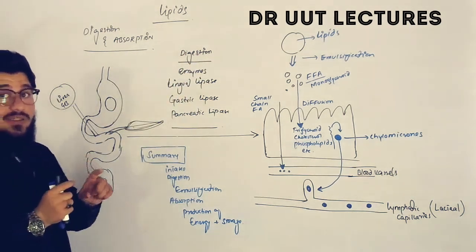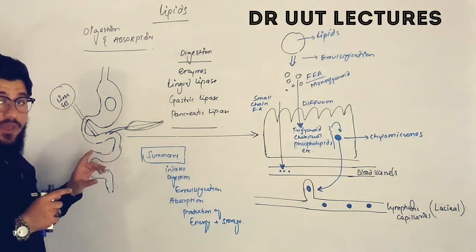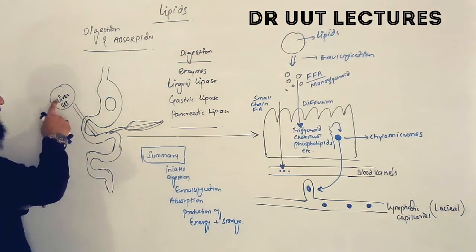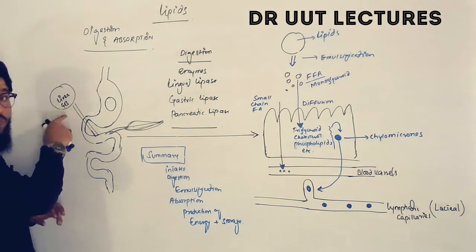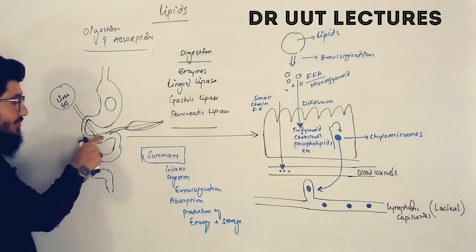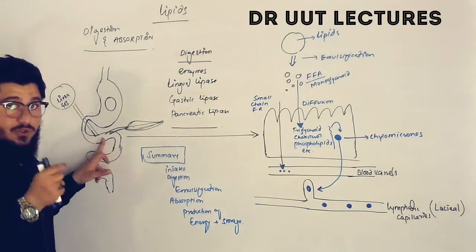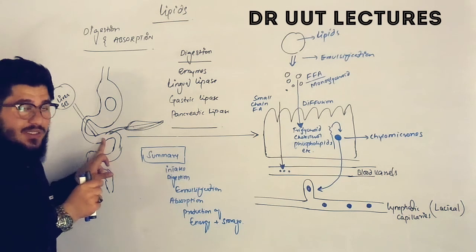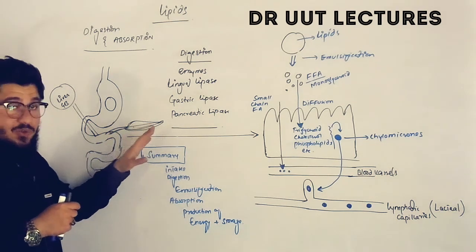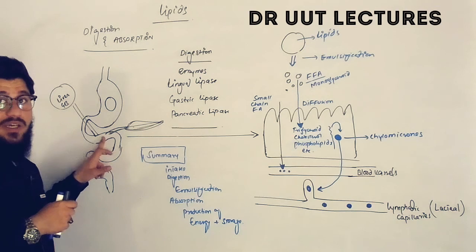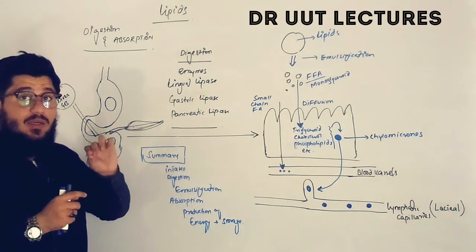Digestion is completed in the small intestine, and the reason behind this is the availability of bile salts from the gallbladder. These bile salts are secreted into the small intestine, where our lipids are broken down into small, tiny droplets. Then the enzymes from the pancreas act on these small droplets, and like this, the digestion process of the lipids is complete.